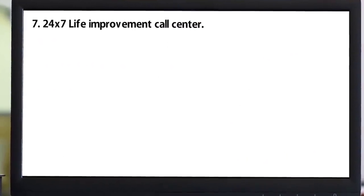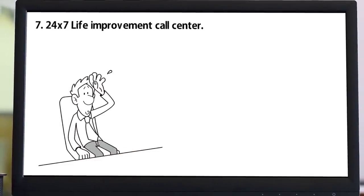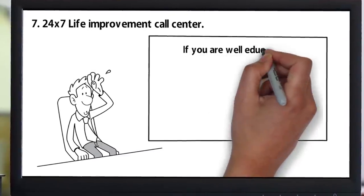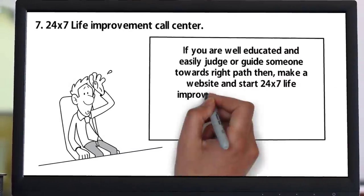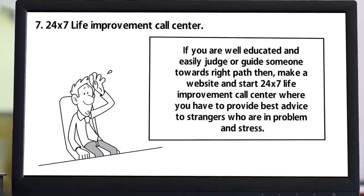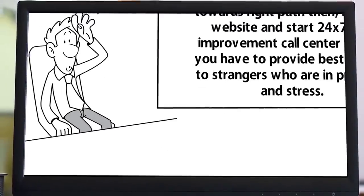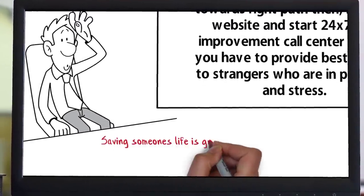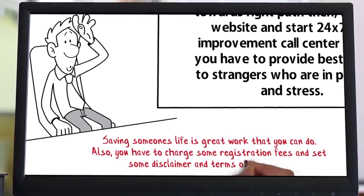Number seven: 24x7 life improvement call center. Most people are facing struggles in their personal and professional life. If you are well educated and can easily judge or guide someone towards the right path, then you can make a website and start a 24x7 life improvement call center where you provide best advice to strangers who are in problem and stress. Saving someone's life is a great work. You have to charge some registration fees and set some disclaimers and terms and conditions.